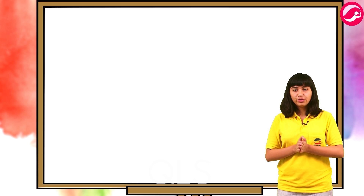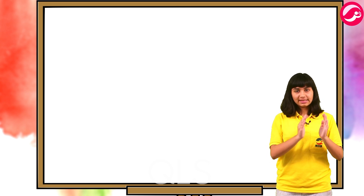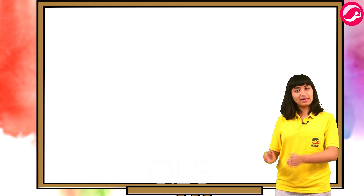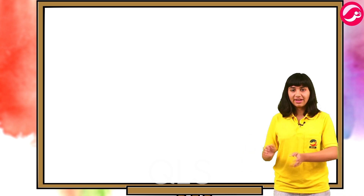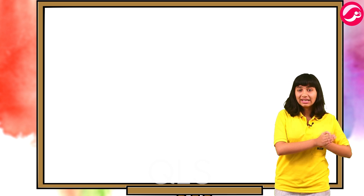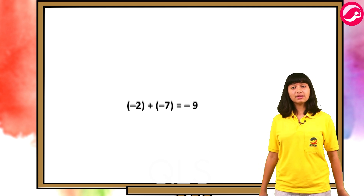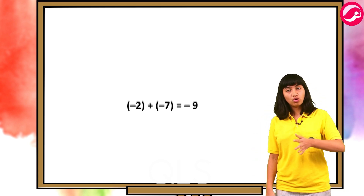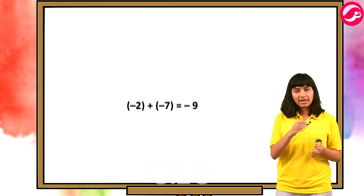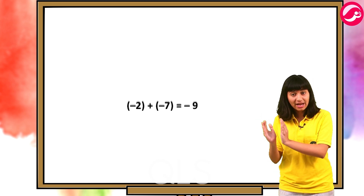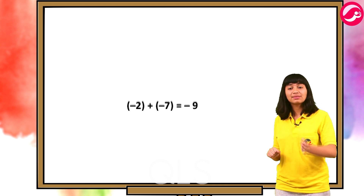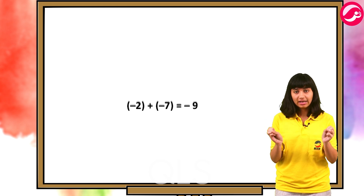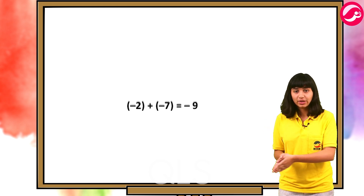So aaj kya sikha: you add when you have two positive integers — jaise plus three plus plus two is equal to plus five. You also add when you have two negative integers — yaad hai jab do baar neeche sidiyan utarti thi — dono baar negative — usko bhi add kiya tha. Minus two plus minus seven equals minus nine — minus aur minus ka sum kiya.